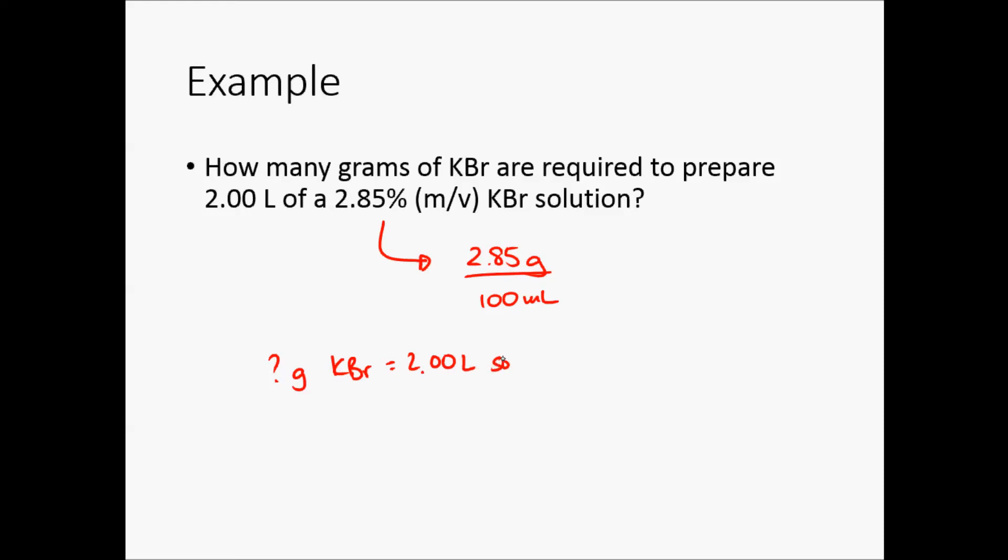What we have to do first is, because I've got milliliters here, I need to convert from liters to milliliters. So that's 1,000 milliliters over 1 liter times, now, here I have, for every 100 milliliters, I have 2.85 grams of solute, and therefore, this would be equal to 57 grams.